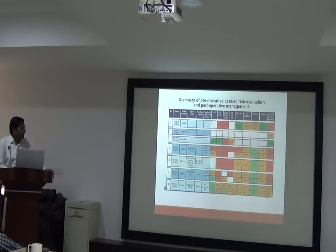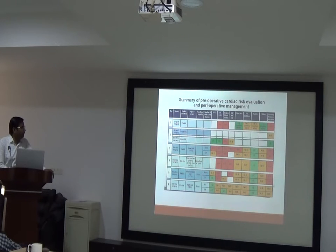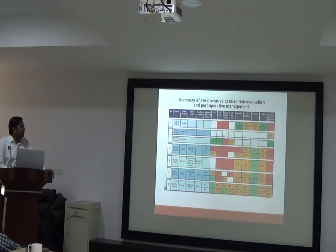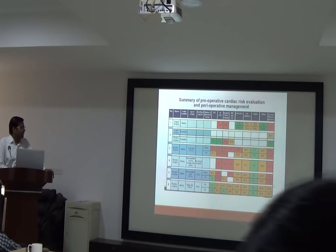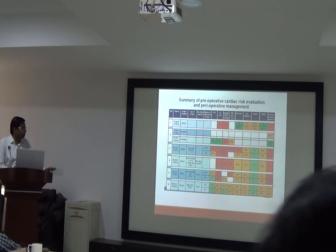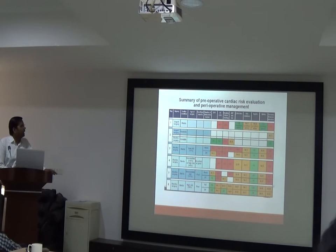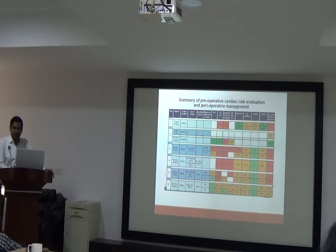For elective surgery in a stable patient with intermediate risk surgery and poor functional capacity — less than 4 METs — the number of risk factors must be considered. If no risk factor, a baseline ECG should be taken and the patient can proceed. If more than one risk factor, ECG must be taken plus a stress test — which is class 2B indication — before proceeding to surgery.